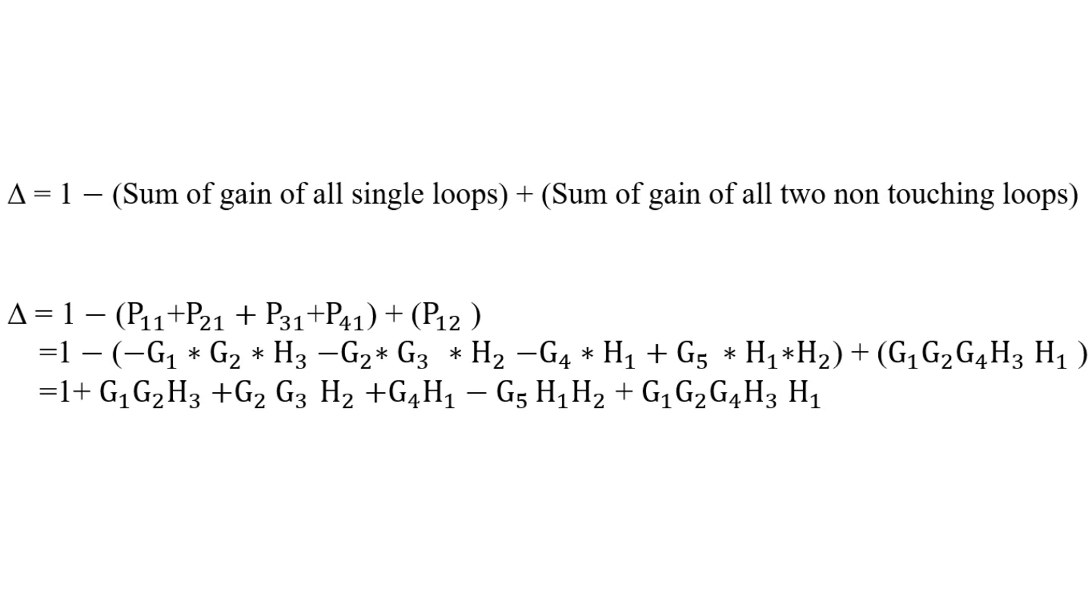Now the next step is to find the value of delta. Delta is 1 minus the sum of gain of all single loops, plus the sum of gain of all two non-touching loops, and so on. We have derived all values earlier, so by just putting those values, we can find delta.